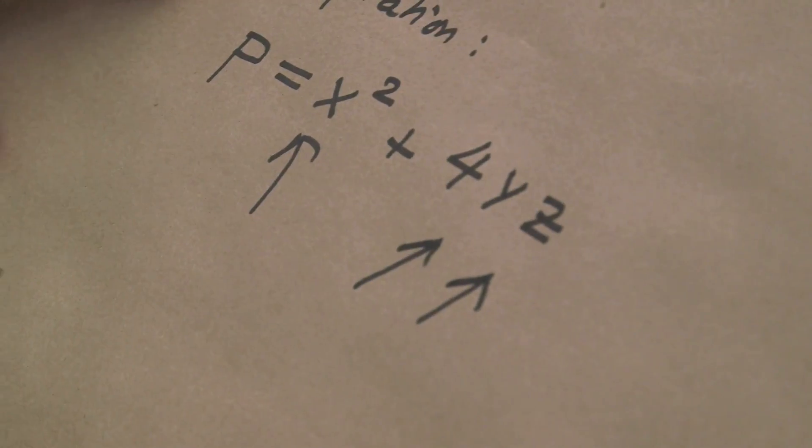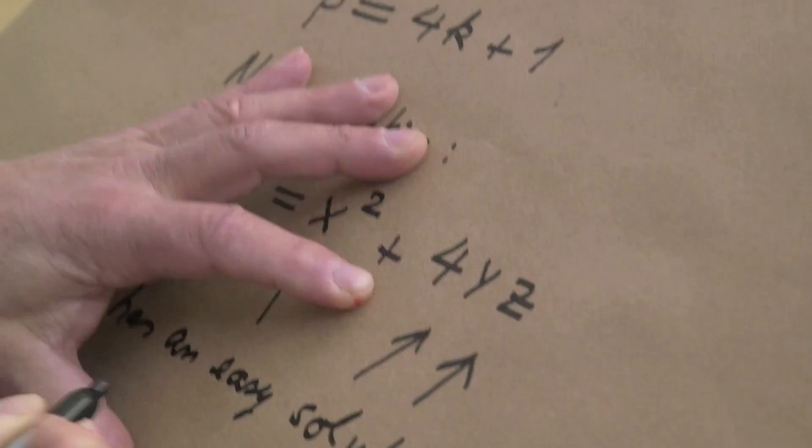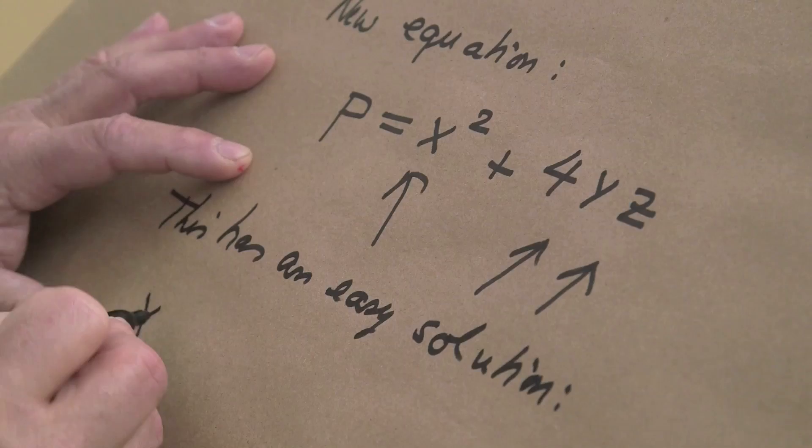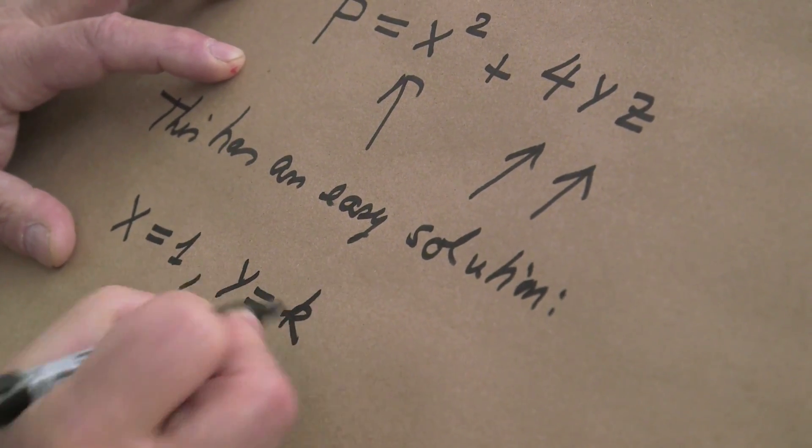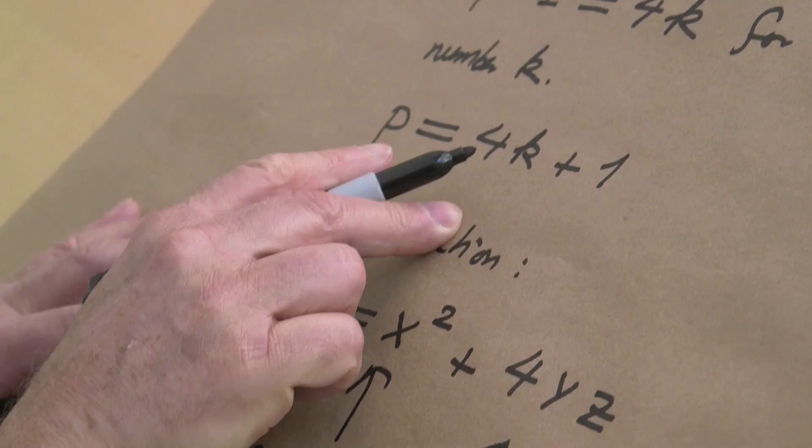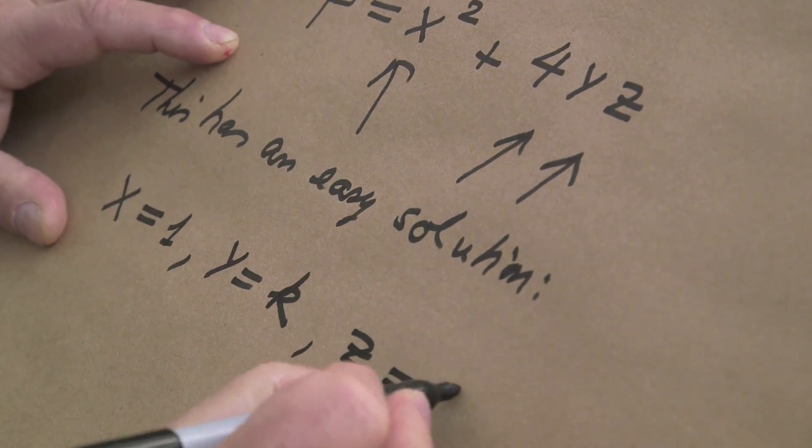Namely, it's completely trivial to write down at least one solution. This has an easy solution: take x equal 1, y equal k (this is this k above here), and z again equal 1.